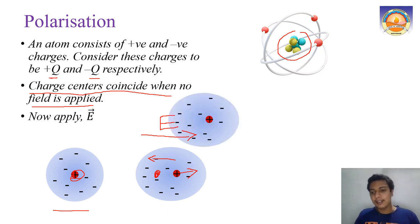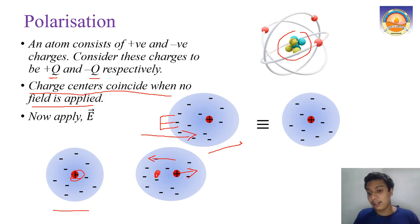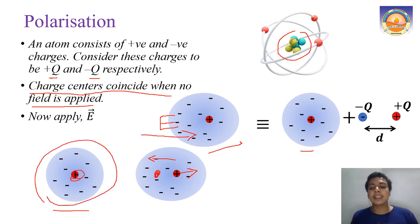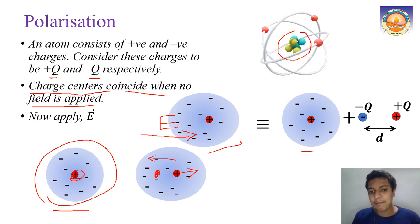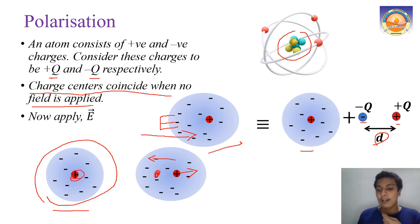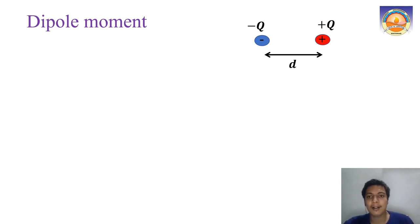This situation is equivalent to a normal atom plus a dipole moment. Without an electric field there was no dipole moment because positive and negative charges coincided. But once we apply an electric field, a dipole is created due to the charge displacement — equivalent to placing +q and -q at a distance d apart. So in a dielectric, applying an electric field creates a dipole.